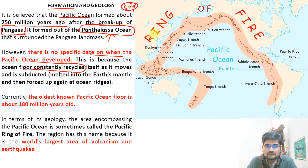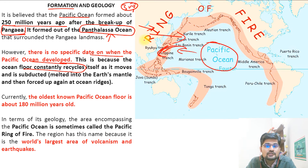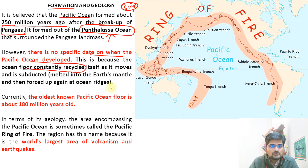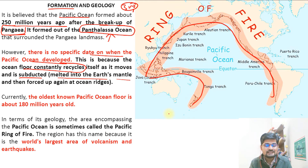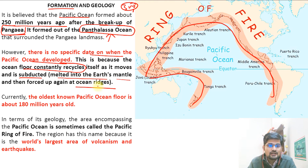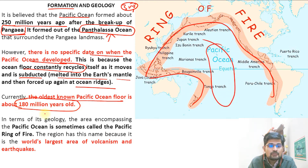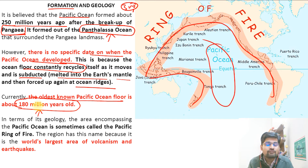The subduction process is constantly happening — the Pacific plate is subducting under the Eurasian plate, causing lots of changes at these boundaries. During subduction, material melted into the Earth's mantle comes back up and forms ridges. The oldest known Pacific Ocean seafloor is about 180 million years old, meaning newer crust has been constantly forming through this recycling process.